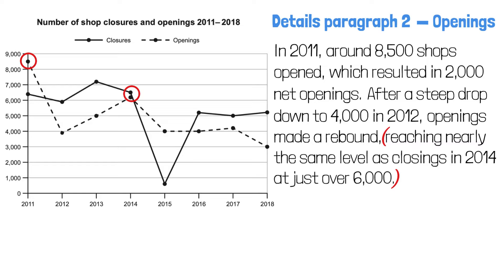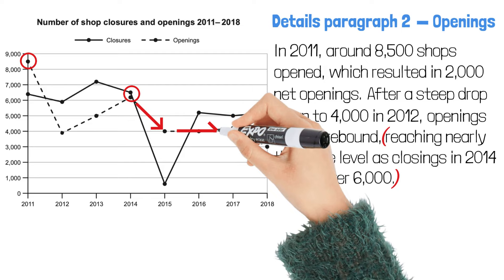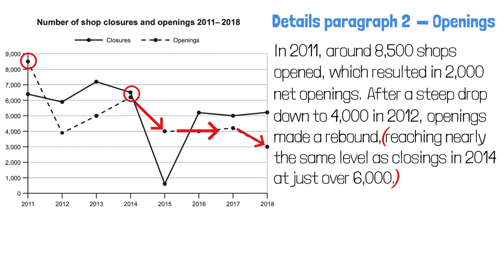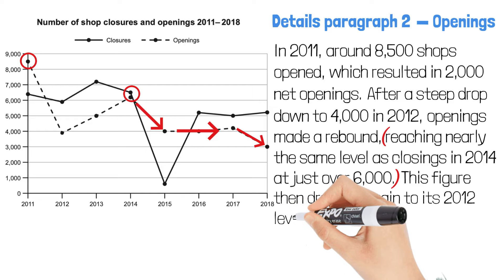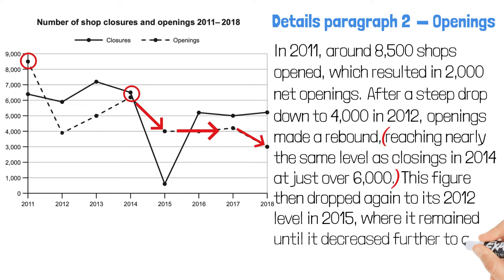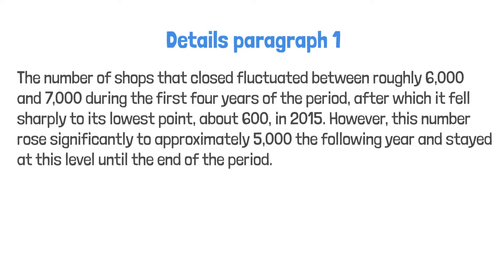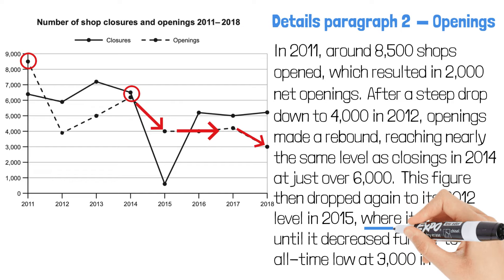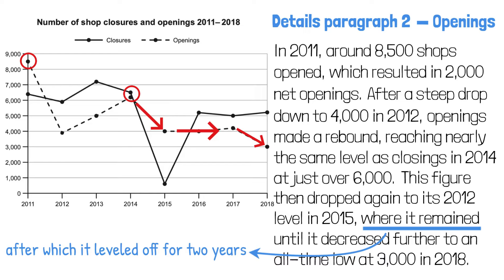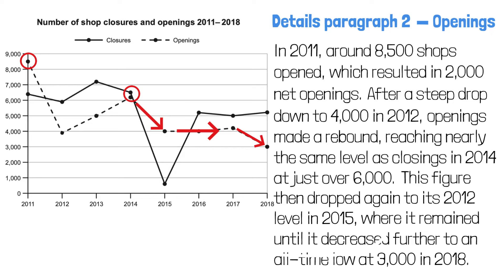Next, I'm going to say the number decreased again, then remained stable, then decreased further. Pay attention to the linking words: 'This figure then dropped again to its 2012 level in 2015, where it remained until it decreased further to an all-time low at 3,000 in 2018.' 'Where it remained' means it remained at its 2012 level. 'After which' can also link these clauses, just as in details paragraph 1. I also want to highlight the verb 'further' — it conveys two meanings: it fell again, and it fell below the low points previously mentioned.